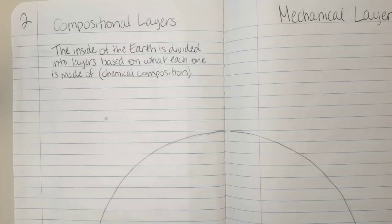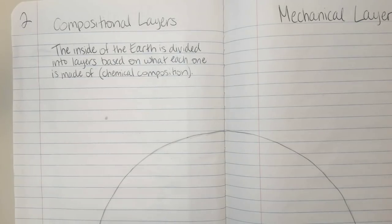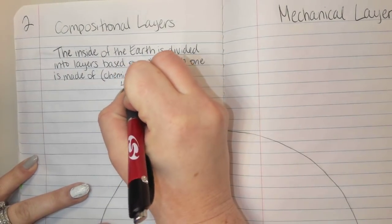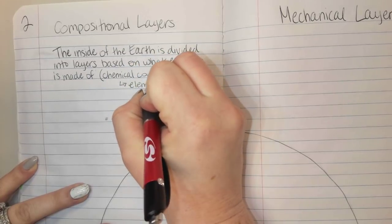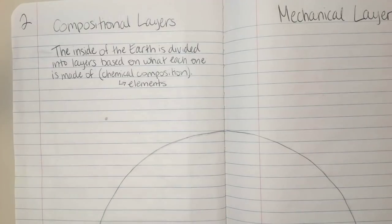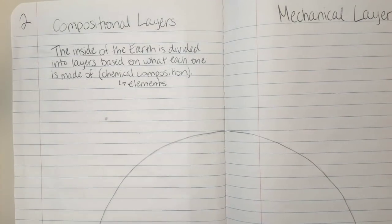And that's where we get the term compositional layers. If you think back to when we talked about the periodic table in our chemistry unit, we talked about the elements. So when we look at each of the layers, we're going to look at what elements make up that layer.